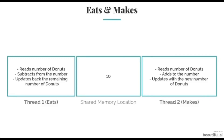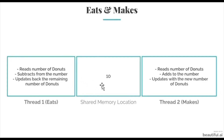I have two threads of the same process. Thread one eats donuts, whereas thread two makes donuts. One of the process's data shared with and accessible by both threads is a variable carrying the number of donuts. Thread one reads the number from the shared memory location, subtracts from this number, and then updates the shared variable. Thread two also reads the number of donuts in the shared memory location, adds to this number, and then updates the shared variable.